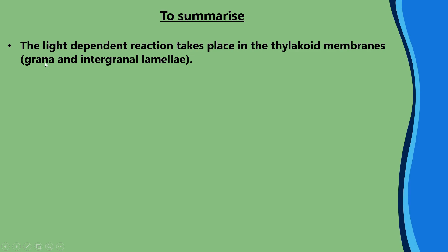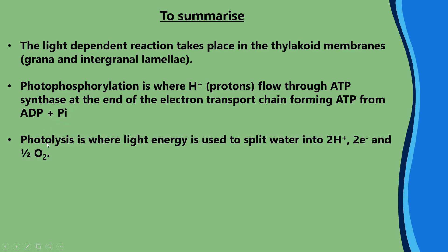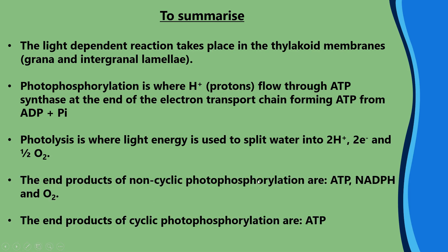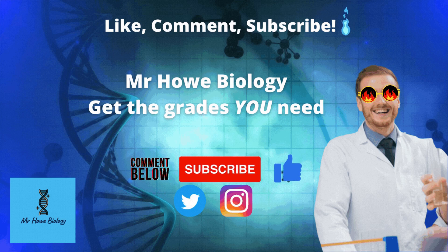To summarize: the light-dependent reaction takes place in the thylakoid membranes, also known as the grana and intergranal lamellae. Photophosphorylation is where hydrogen ions flow through ATP synthase at the end of the electron transport chain, forming ATP from ADP plus inorganic phosphate. Photolysis uses light energy to split water into two protons, two electrons, and half an oxygen molecule. The end products of non-cyclic photophosphorylation are ATP, NADPH, and oxygen; the end products of cyclic photophosphorylation are ATP only. Drop in the comments what you want to see next!